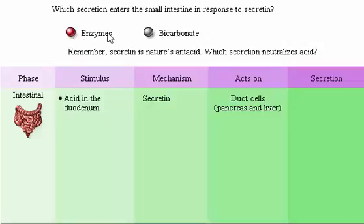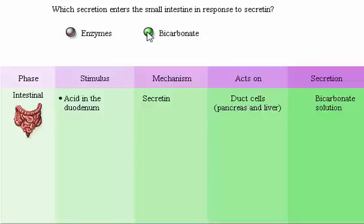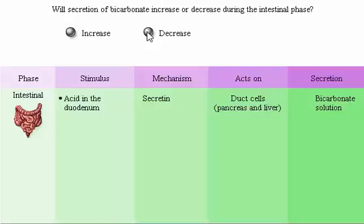Secretin is nature's antacid. The secretion that neutralizes acid is bicarbonate. Secretion of bicarbonate will increase during the intestinal phase.